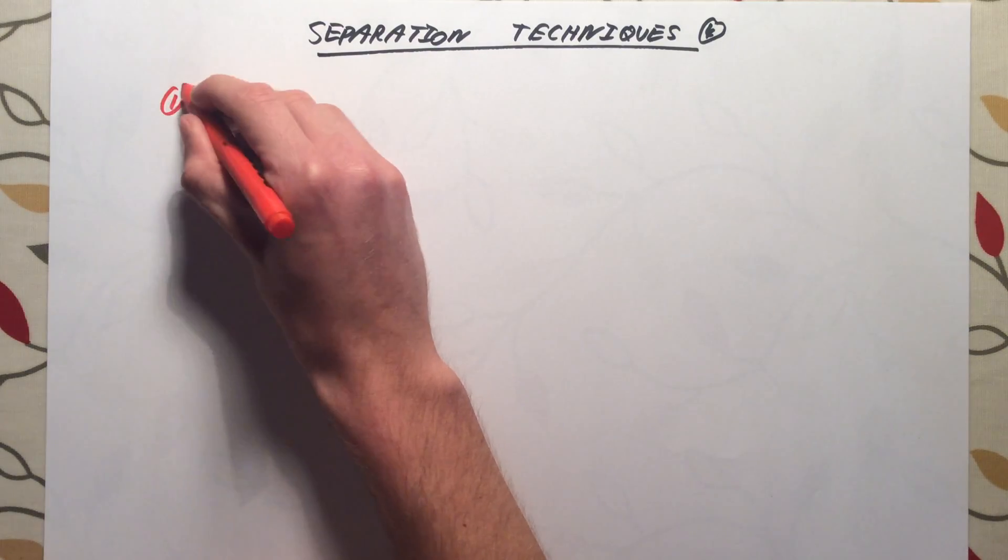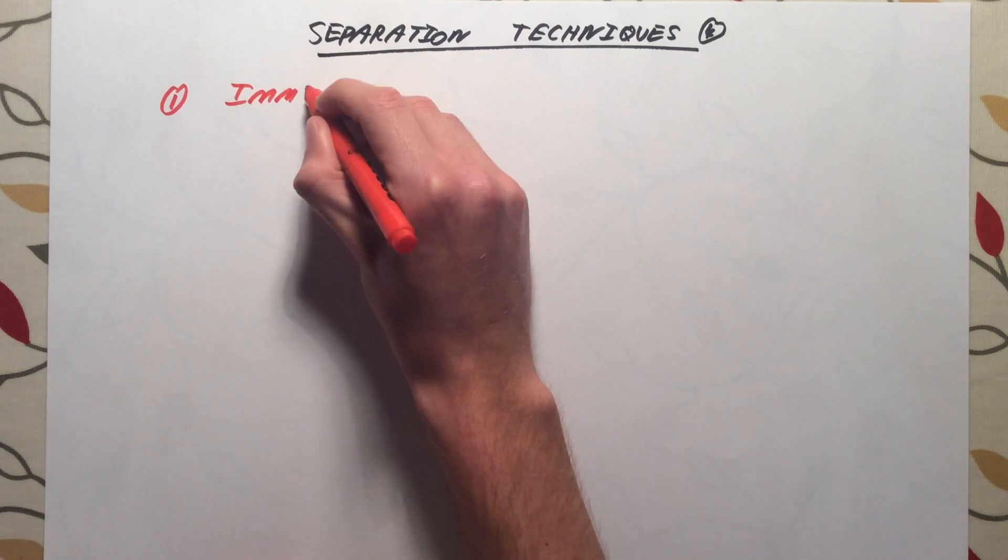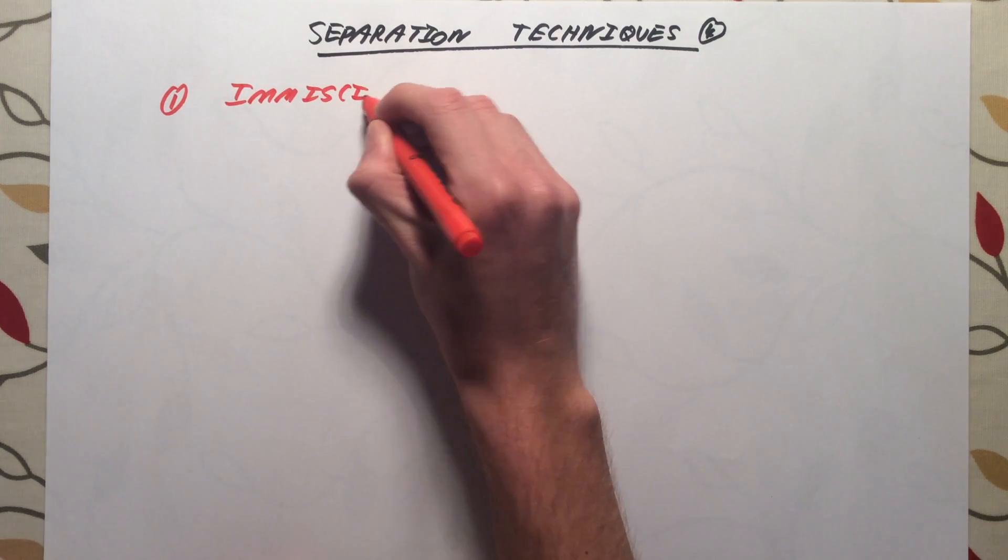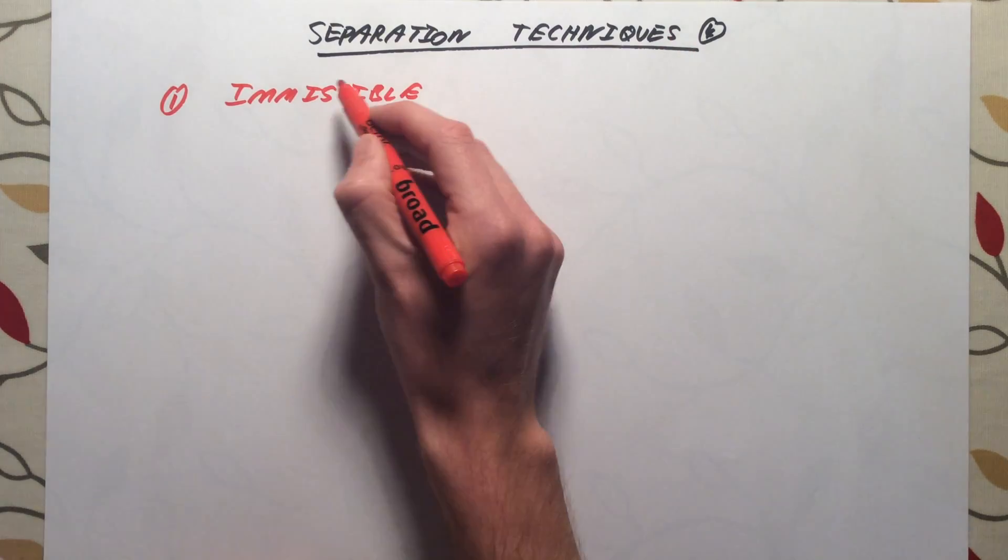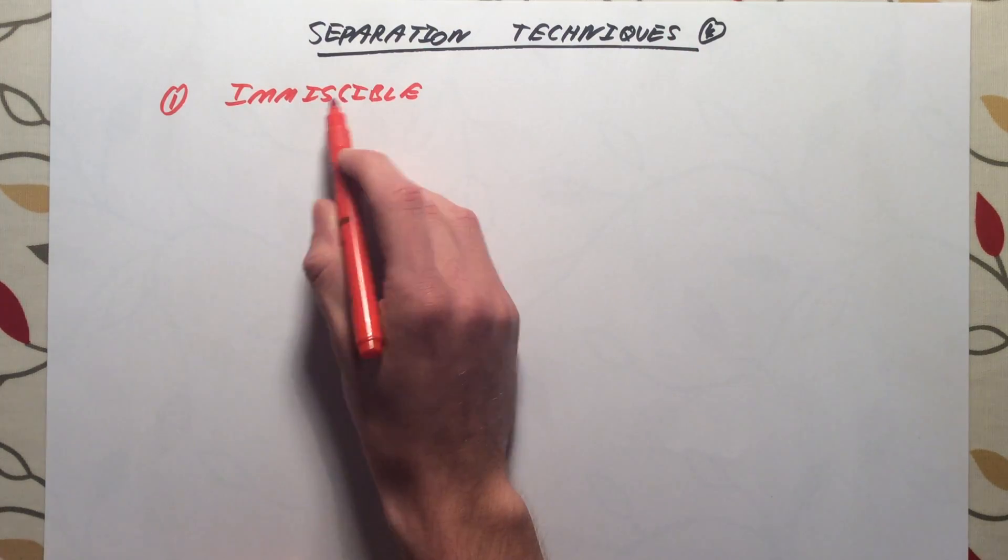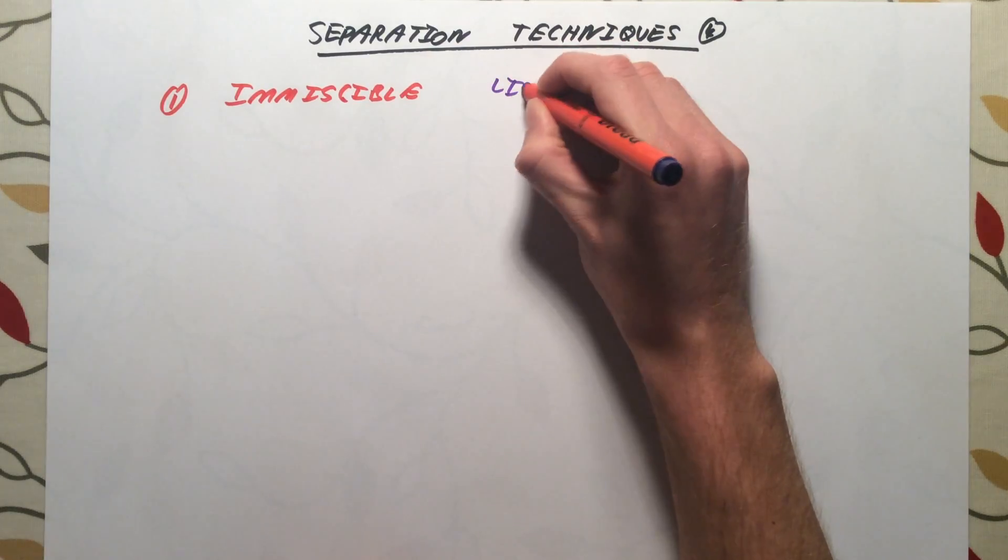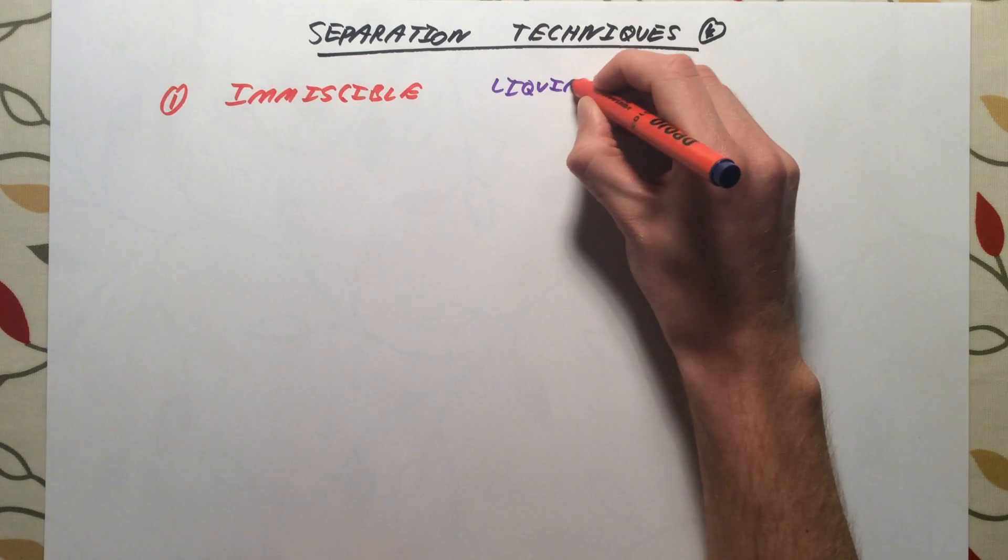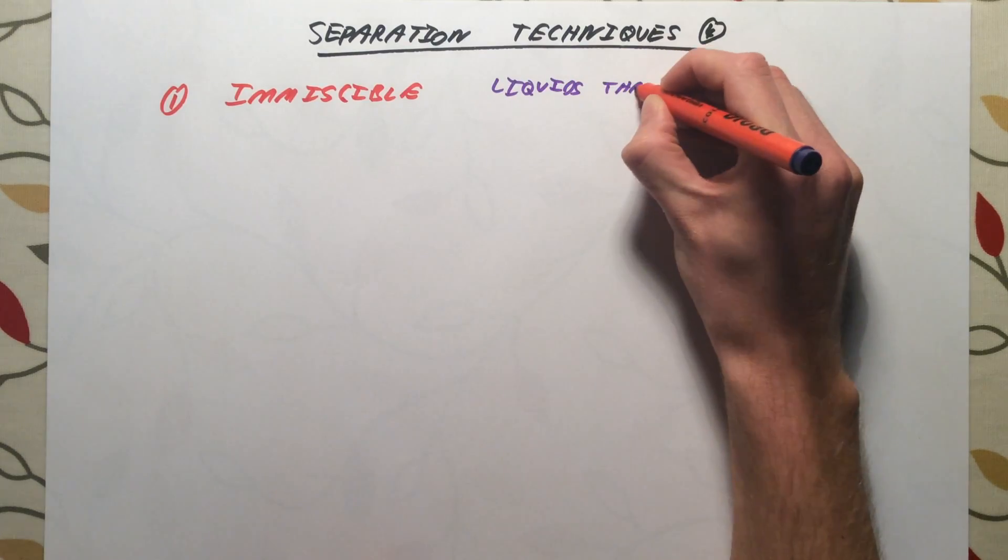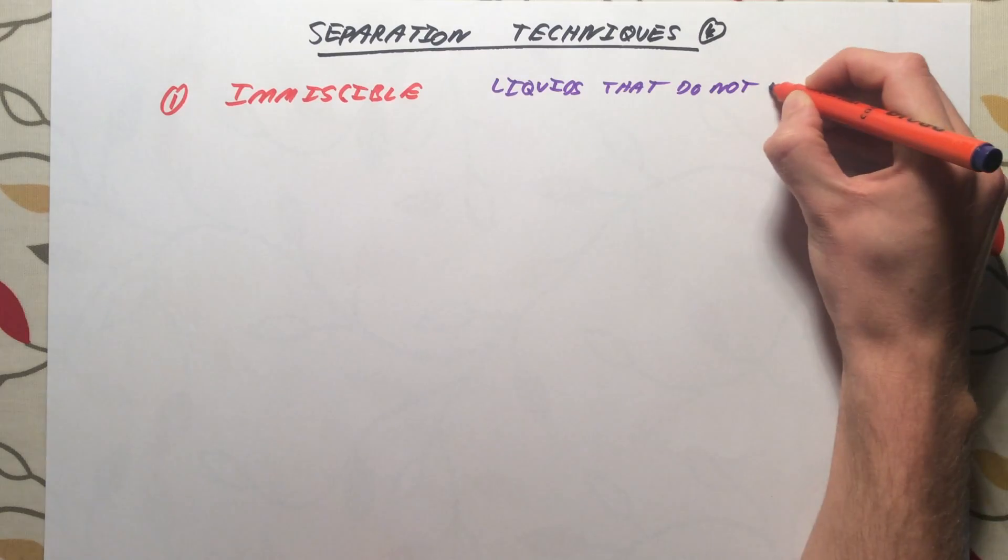We need to know three ways in which we can separate mixtures, and in particular, mixtures of liquids. The first one is if we have what we call immiscible liquids. Immiscible, think about this if you want as unmixable, so liquids that do not mix together.